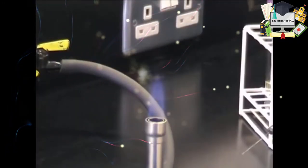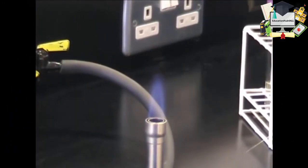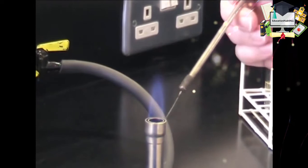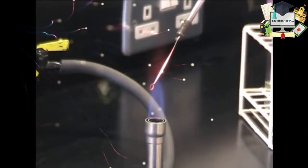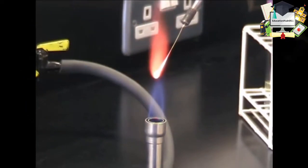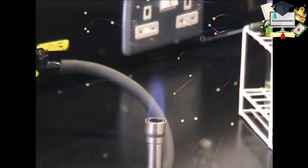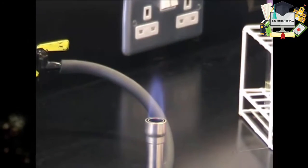Before you start work, the first thing you need to do is sterilize your loop. So pass your loop through the flame, pulling it up through the top of the blue cone until it glows red hot, remove it from the cone and allow it to cool. Do not put it down on the bench.